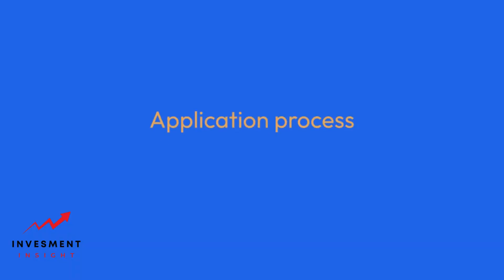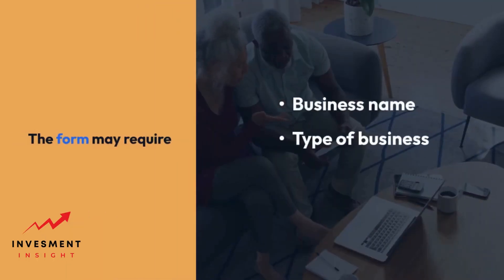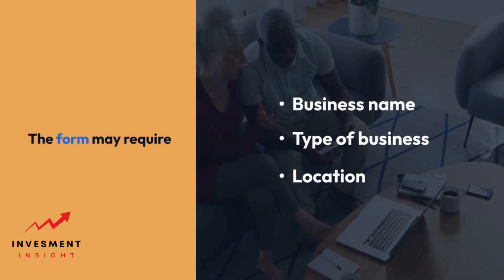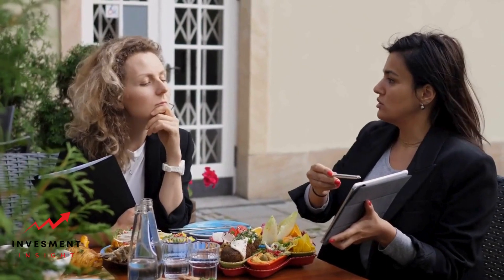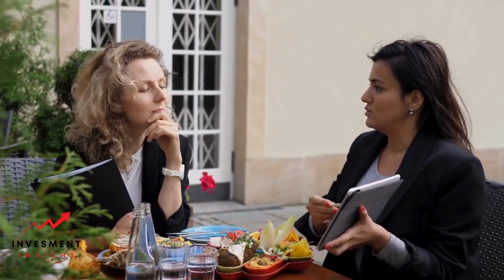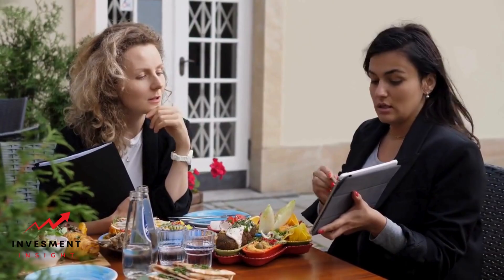Application Process: The application process for a business license typically involves filling out a form and submitting it to the appropriate government agency. The form may require information such as the business name, type of business, location, and ownership structure. In some cases, additional documentation may be required, such as proof of insurance or a zoning permit.